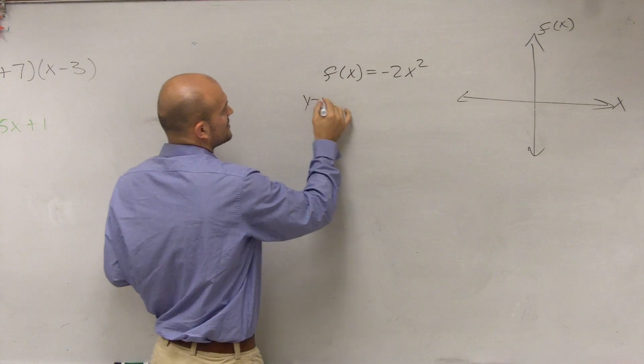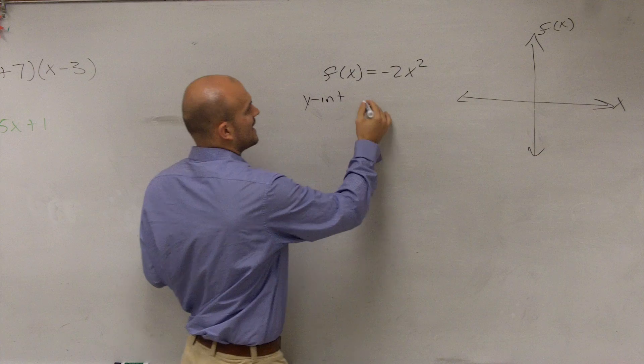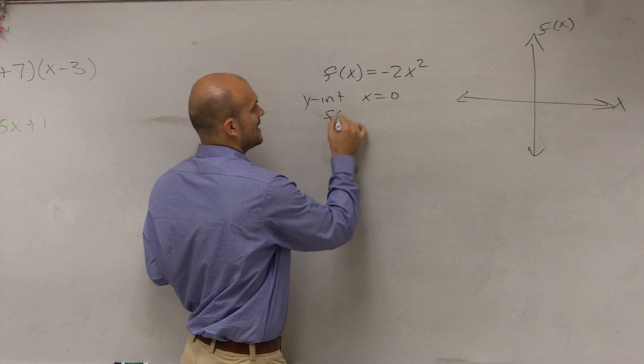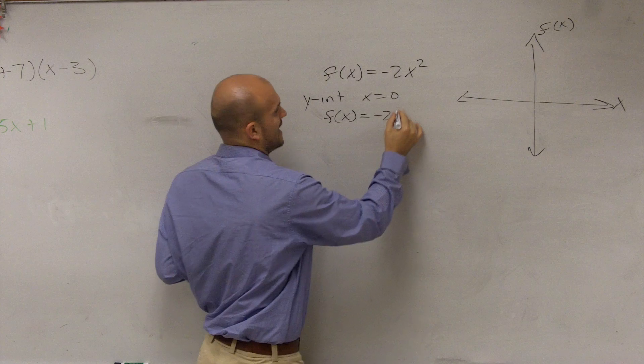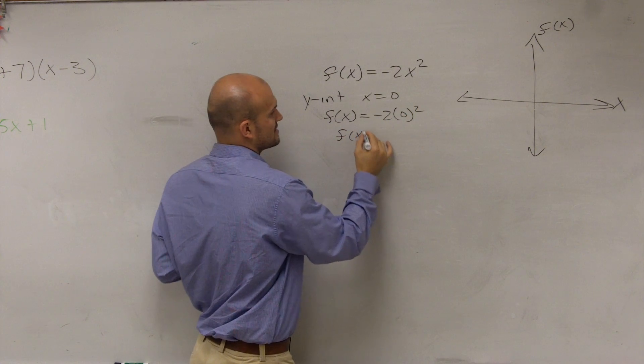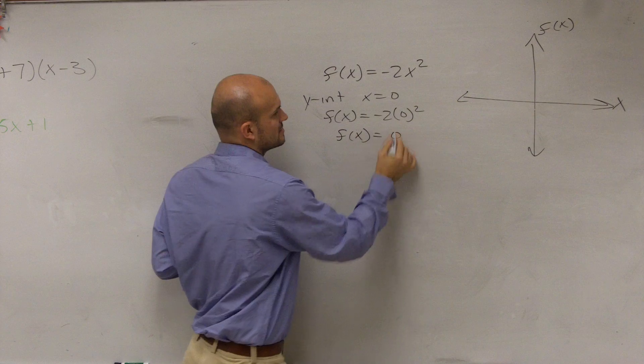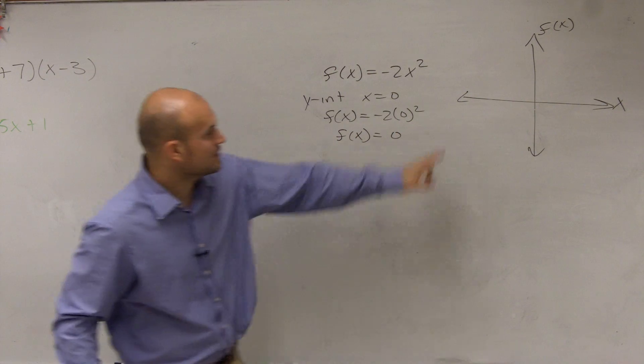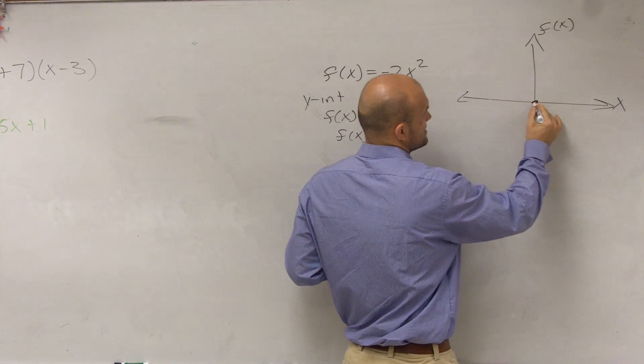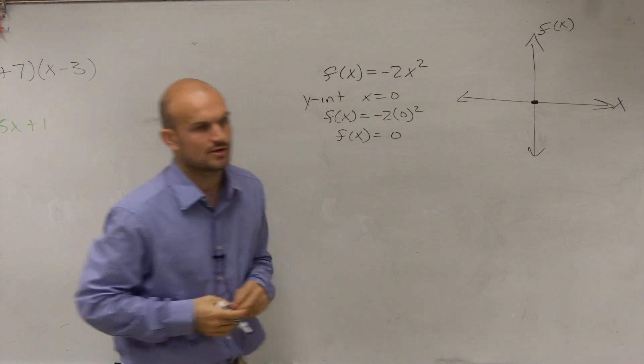So to find the y-intercept, what we need to do is just set x equal to 0. So I say f(x) = -2 times 0². So f(x) = 0. So that means my graph crosses the y-axis, or really in this case the f(x)-axis, at 0, 0.